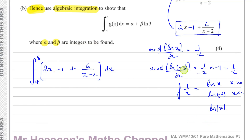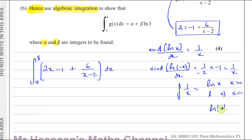Both of those differentials — of ln(x) and of ln(negative x) — give us the same result, 1 over x. So the integral of 1 over x is ln(x) if x is greater than 0, or ln(minus x) if x is less than 0. We combine them into one statement by writing ln of the modulus of x, ensuring no negative input ever goes into the ln during integration.